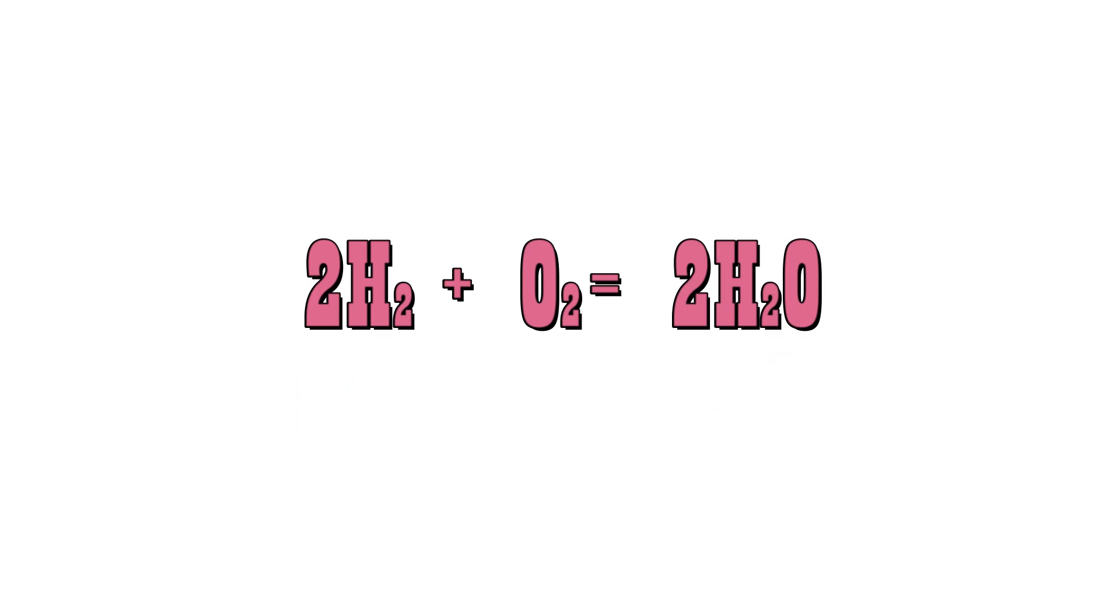Secondly, the reactants and products both should have equal number of atoms of hydrogen and oxygen. So reactants have 2H2, or 4 hydrogen atoms in total, while O2 means 2 oxygen atoms. Now coming to the products part: 2H2O means 4 hydrogen atoms and 2 oxygen atoms. So both sides match with our principle.